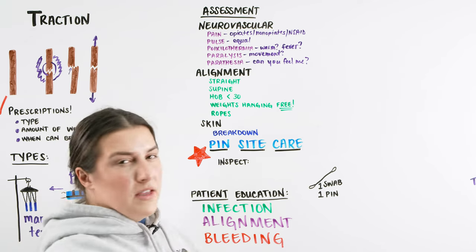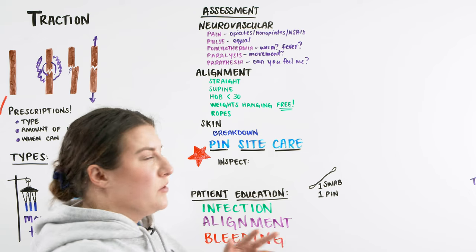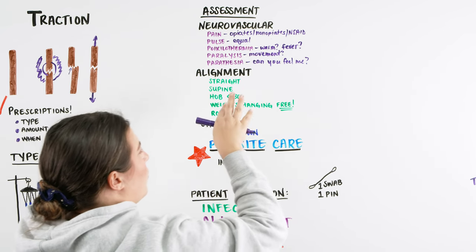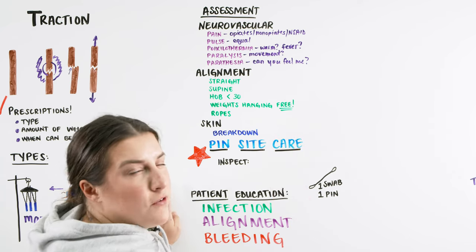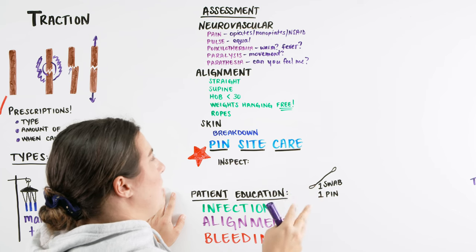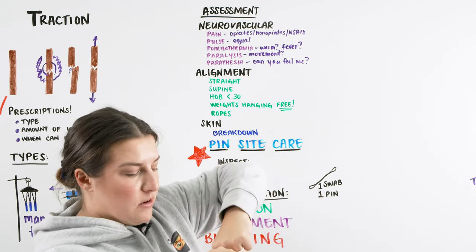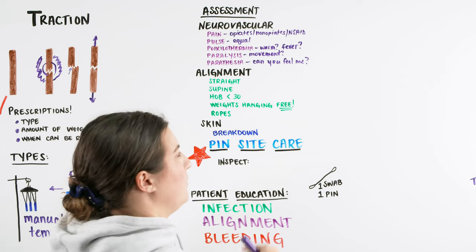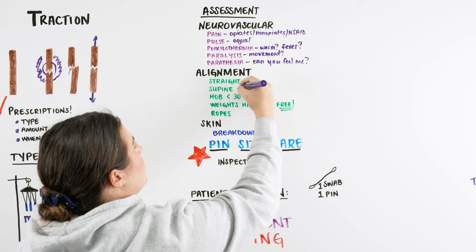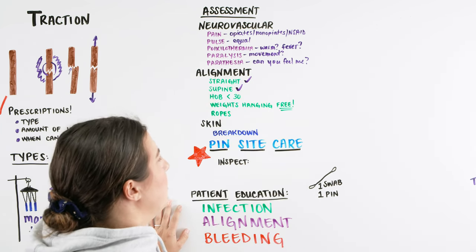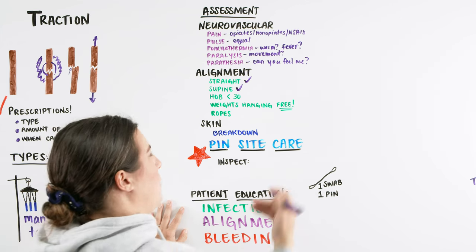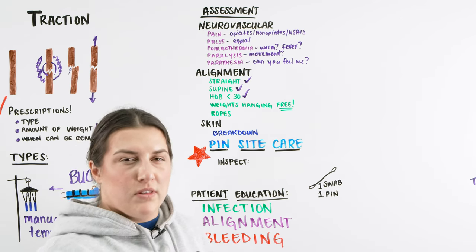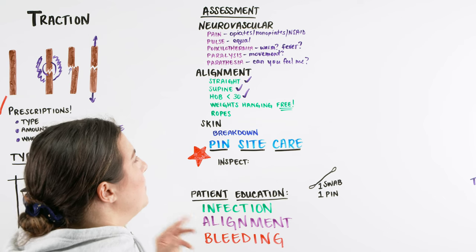We also want to check alignment — the whole mechanism should be set up correctly and the patient should be maintaining it. The alignment should look the same as when it was first set; any shift or rotation that looks off should be reported to the healthcare provider, as it could indicate improper healing. Patients should more than likely be supine, lying flat or with the head of the bed lower than 30 degrees, to avoid shearing and sliding in the bed.